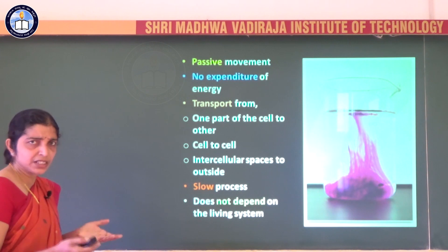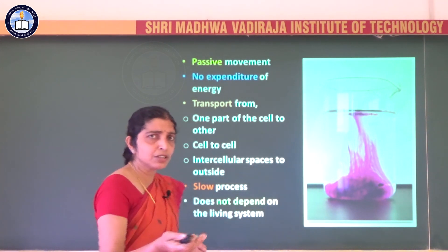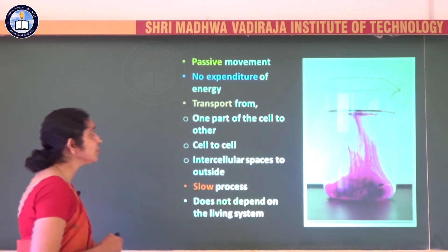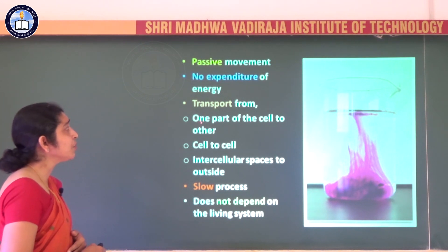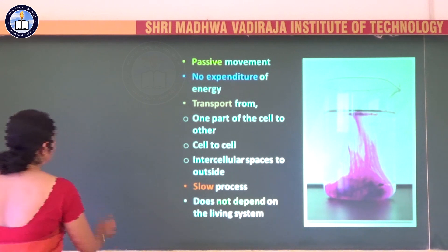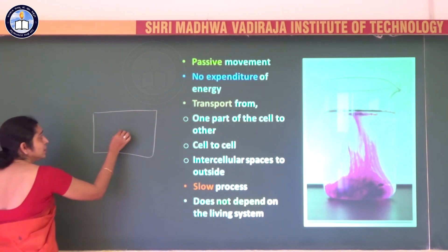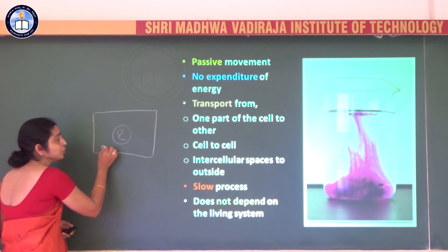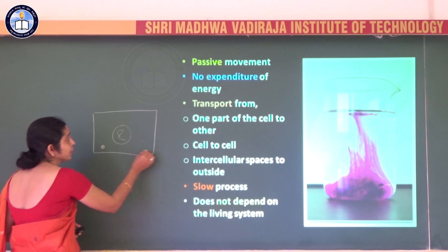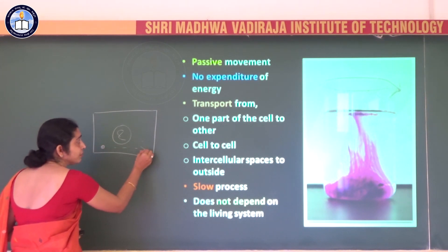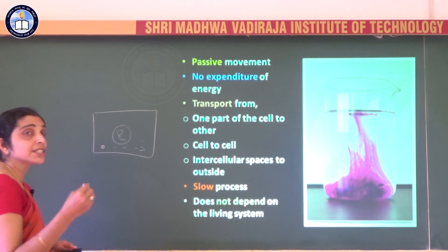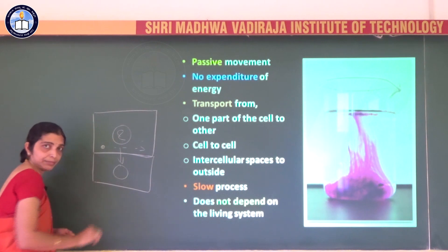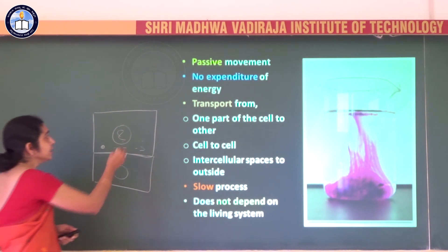Where does diffusion transport take place within a plant? It can occur from one part of the cell to another — within the cell itself. It also occurs from cell to cell: if one cell has a higher concentration of something, it will simply diffuse into the adjacent cell due to the concentration gradient. Diffusion also occurs between the intercellular spaces and the cell — either from the intercellular space into the cell or from the cell to the outside.